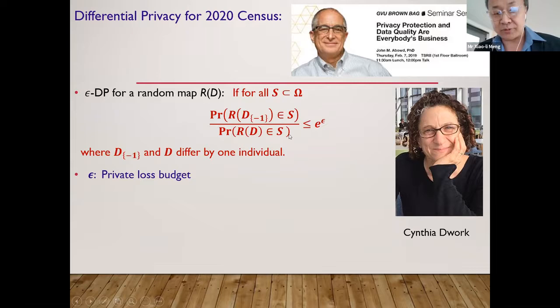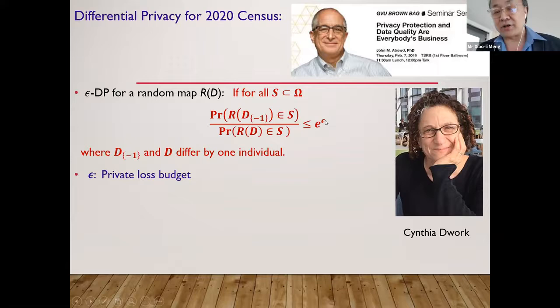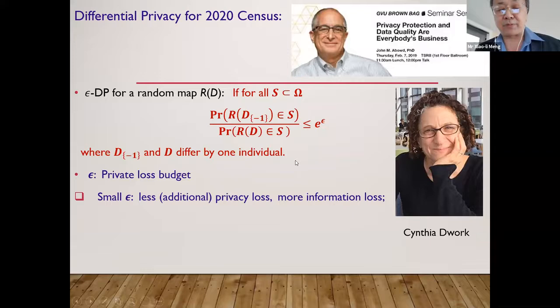So this epsilon itself, it has a technical term you may start to hear as the census project goes on, it's called a privacy loss budget. So the larger the epsilon, the more loss, the more loss of the privacy. And the small epsilon means the less loss of privacy. The more you use a small epsilon, which means you need to inject lots of noise, you can control the privacy very well. But the problem is when you inject lots of noise, you will also lose lots of information.